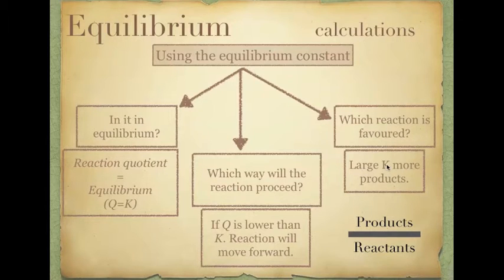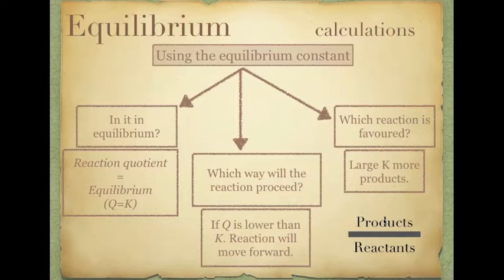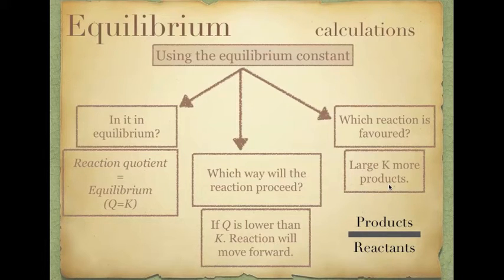If you have a large K value, that means you have lots of products compared to your reactants. So if your K value is greater than 10,000 — 10 to the power of 4 — that means you have lots and lots of products produced. If you have a really small K value, less than 1, that means you have more reactants than products. You can see which one's favoured — whether the forward or reverse reaction is favoured, and where equilibrium lies. A large K value will obviously be better for getting a large yield, so you want to increase K as much as you can.